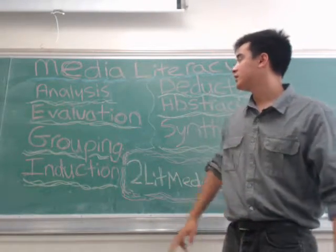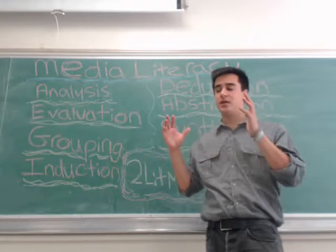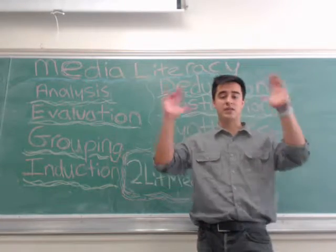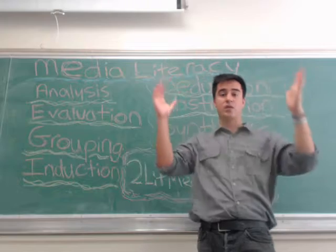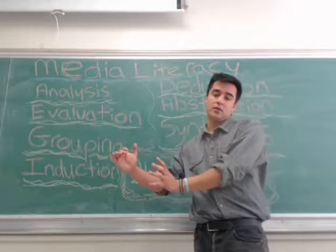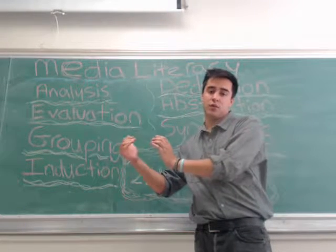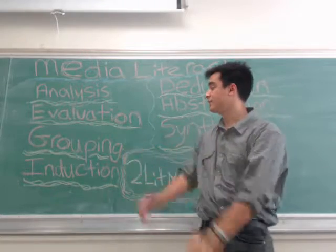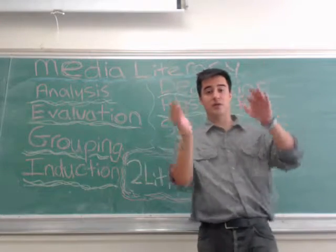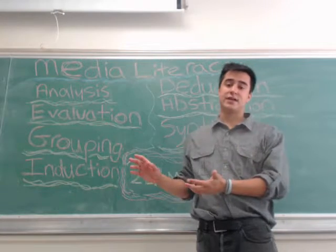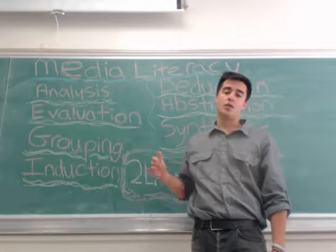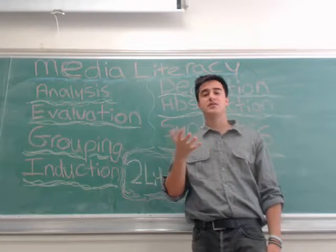Let's start with analysis. Analysis is breaking down something bigger into subgroups. For example, the Oakland Raiders as an entire sports team is the big umbrella — you break it down into subgroups like team players, coaching staff, assistants, and trainers. With movies, you'd break it down into actors, production, and set design.